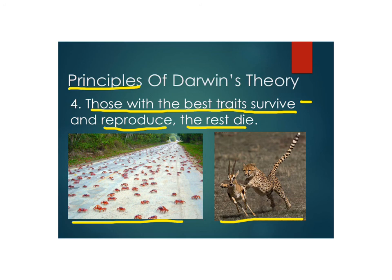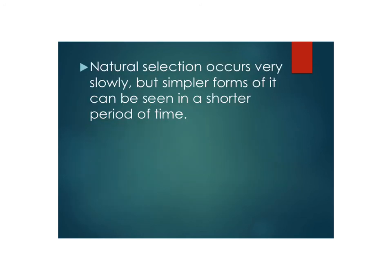That's the heart of Darwin's theory. Understand that natural selection occurs very slowly, but simpler forms of natural selection can be seen in a shorter period of time. We'll talk about those different conditions and shorter time-scale examples later on. For right now, I want you to understand the principles of the theory and a little bit about Darwin. That's all for this lesson.